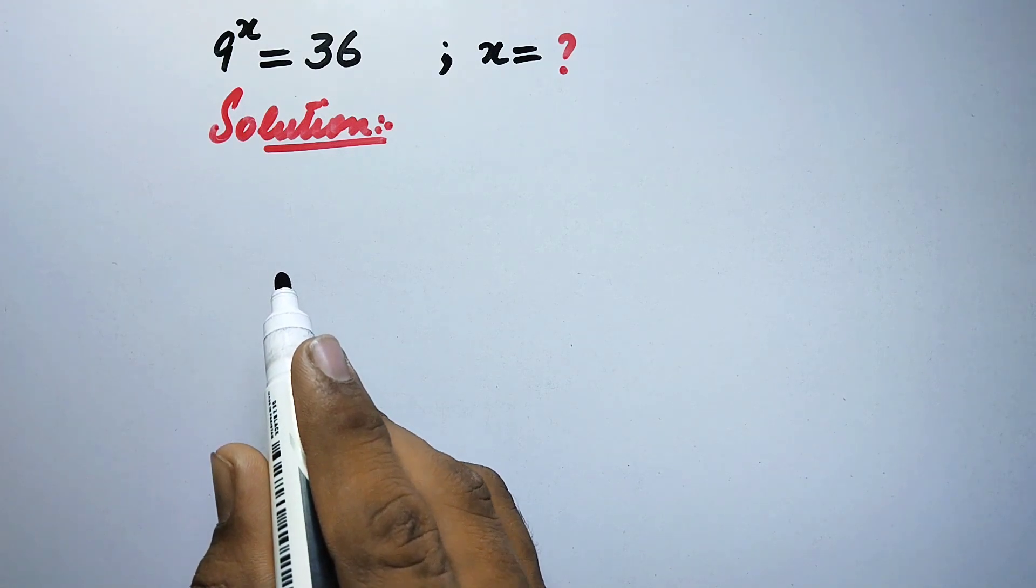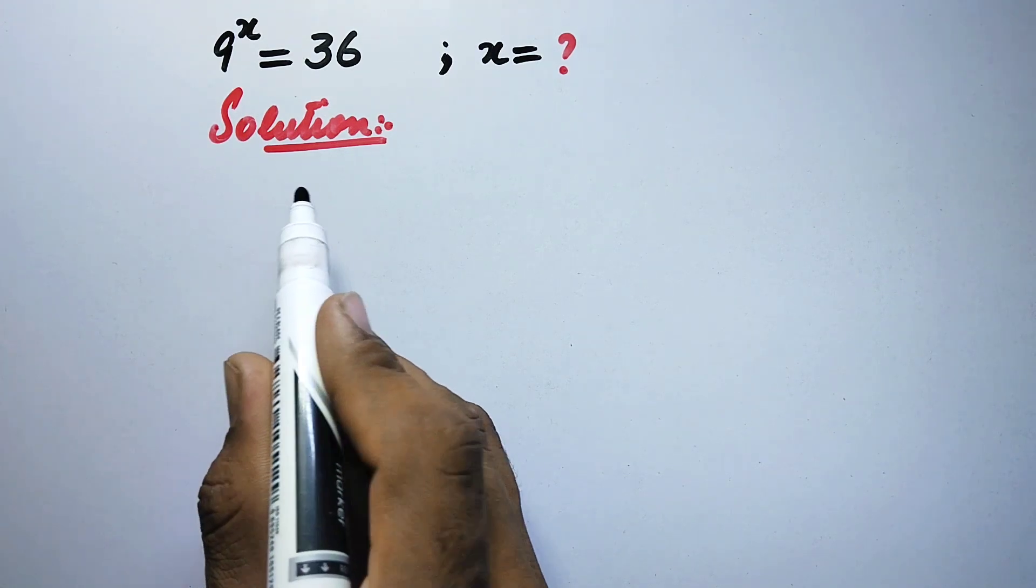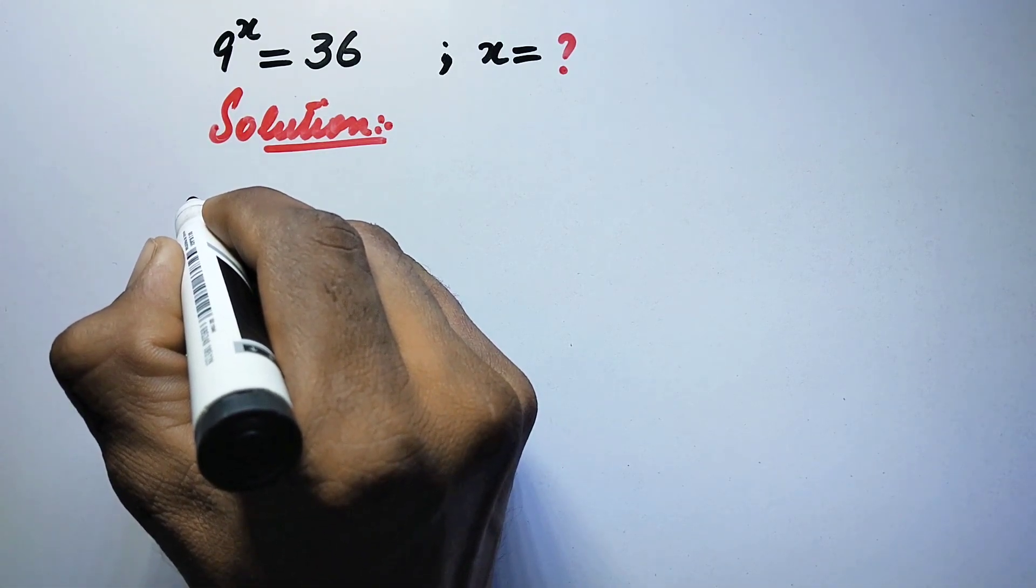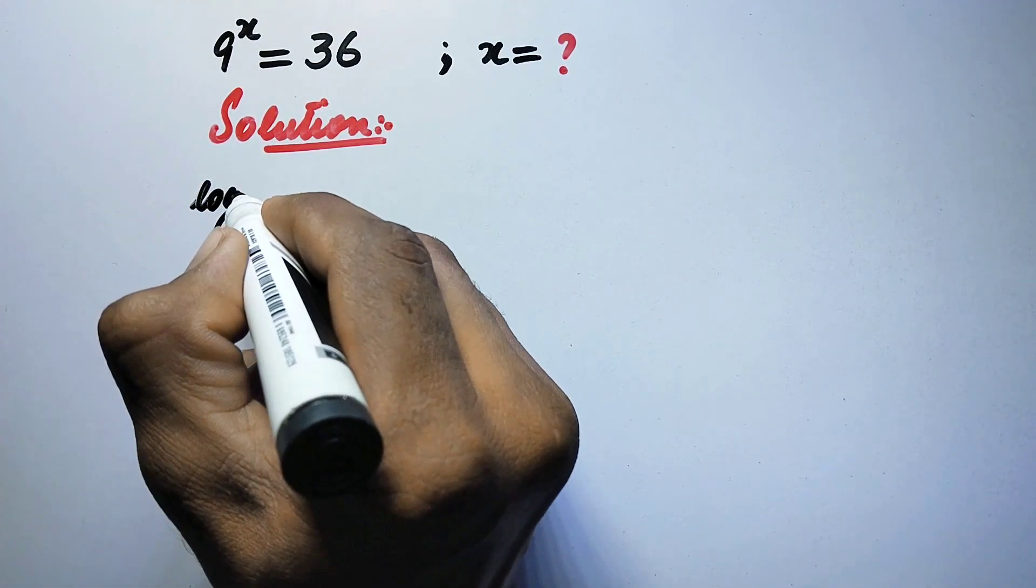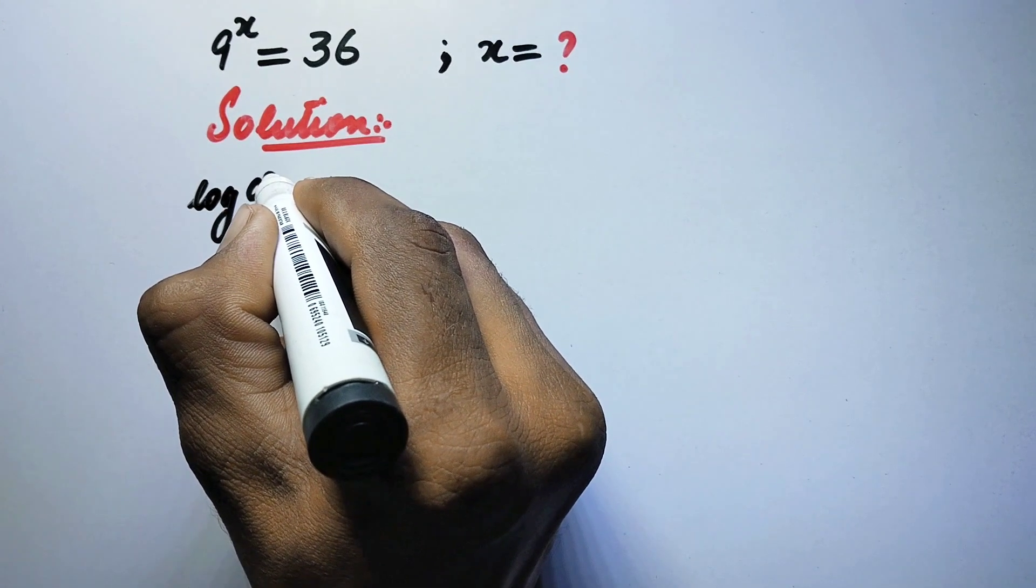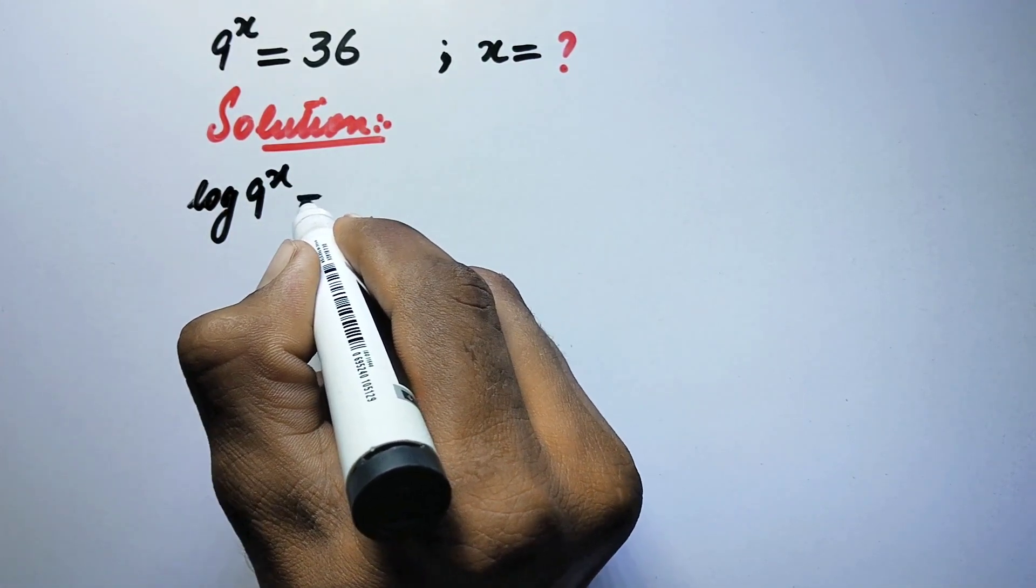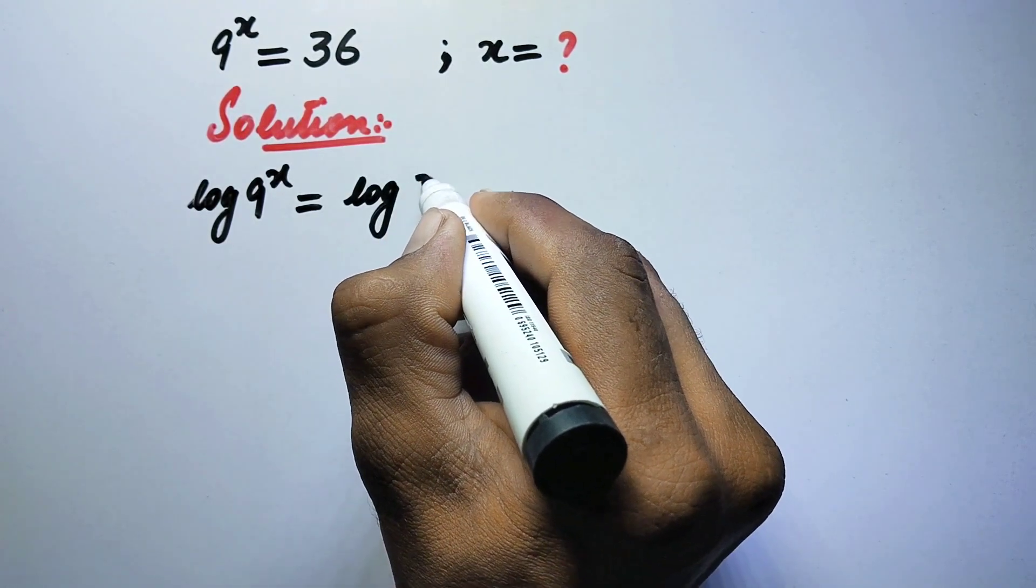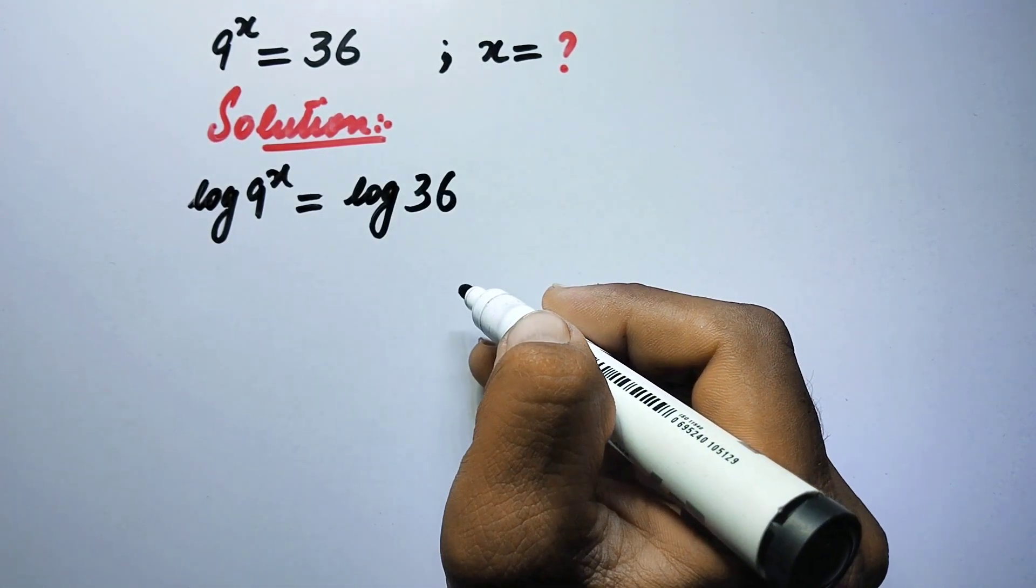So to solve it we will take common log on both sides of equation. Therefore here we will write log of 9 to power x is equal to log of 36.